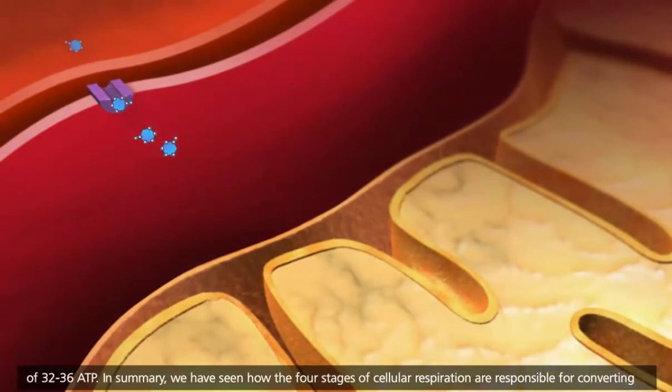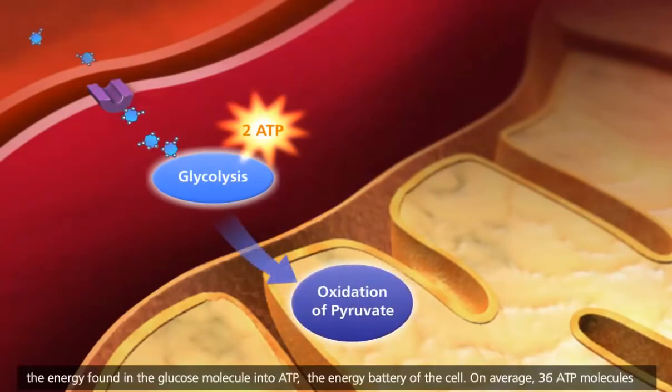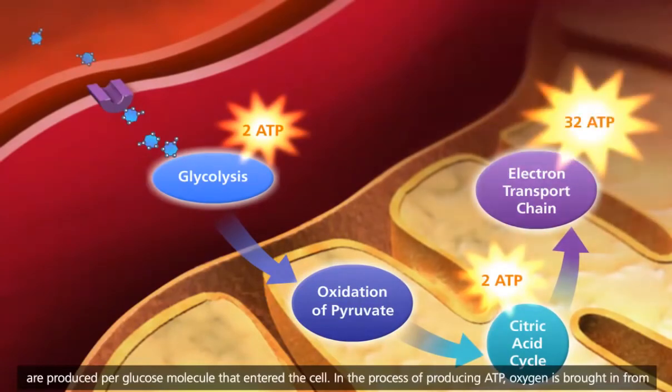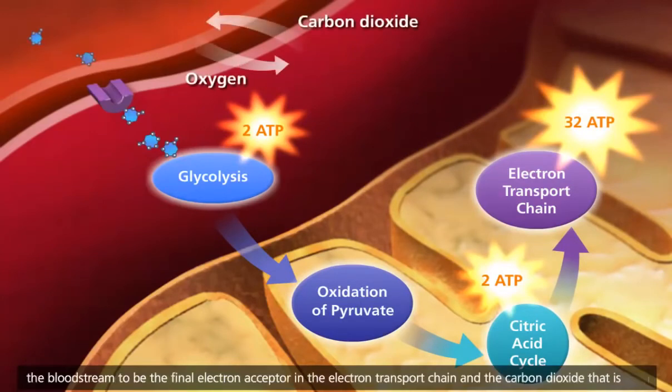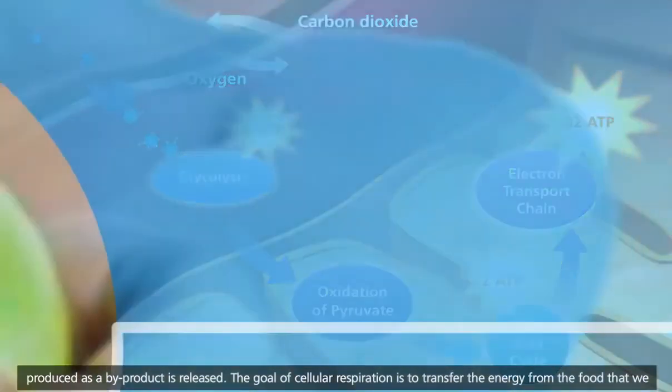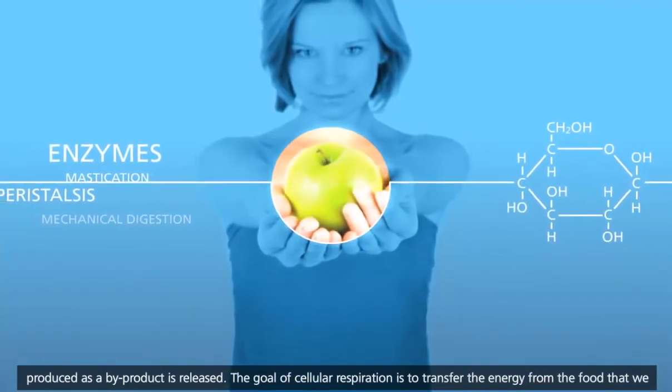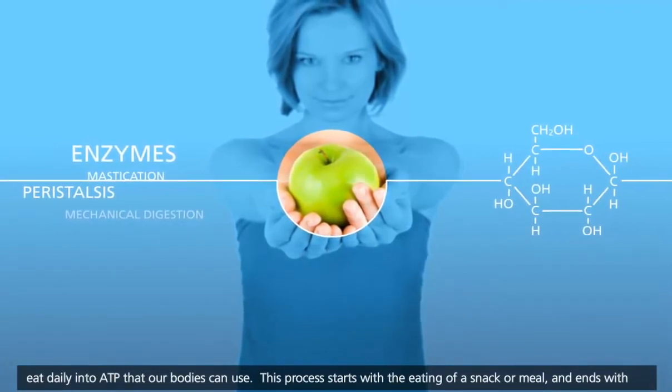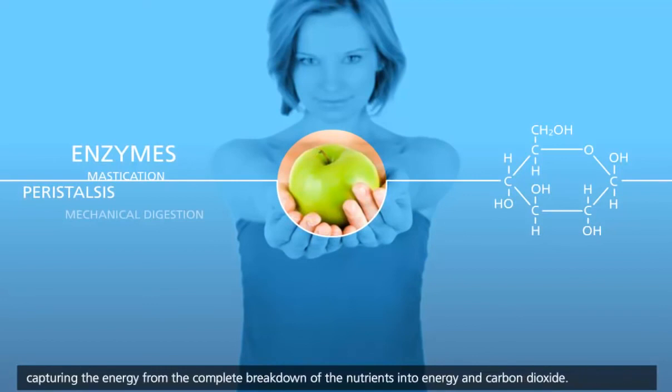In summary, we have seen how the four stages of cellular respiration are responsible for converting the energy found in the glucose molecule into ATP, the energy battery of the cell. On average, 36 ATP molecules are produced per glucose molecule that entered the cell. In the process of producing ATP, oxygen is brought in from the bloodstream to be the final electron acceptor in the electron transport chain, and the carbon dioxide that is produced as a byproduct is released. The goal of cellular respiration is to transfer the energy from the food that we eat daily into ATP that our bodies can use. This process starts with the eating of a snack or meal, and ends with capturing the energy from the complete breakdown of the nutrients into energy and carbon dioxide.